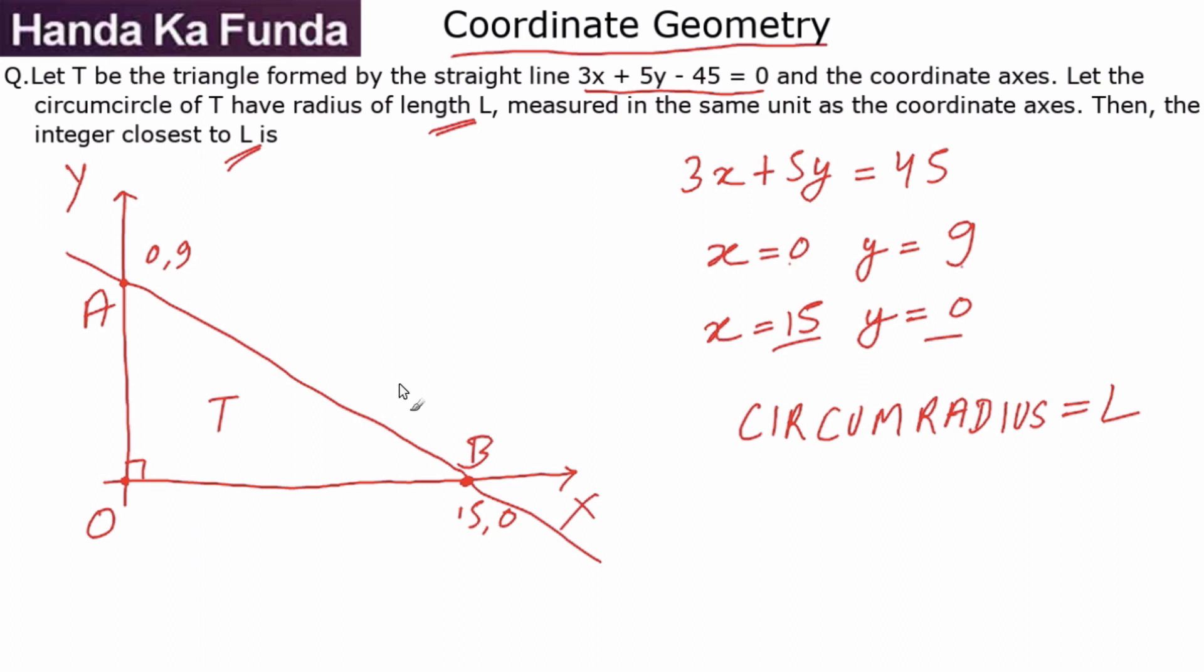Now in case you don't know, we can use various formulas to find out the circumradius, but in case of a right angle triangle, the circumradius is nothing else but hypotenuse divided by 2. That's true for all right angle triangles.